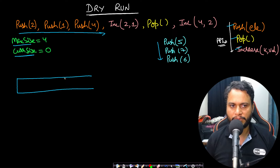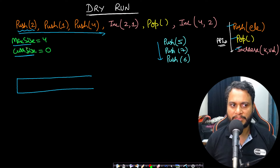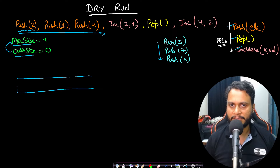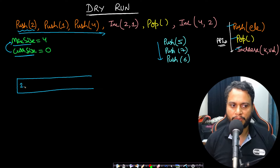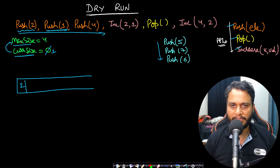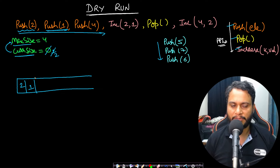We start with an empty dynamic array. When pushing 2, we first check current size against max size — no overflow — so we push 2 and increment current size to 1. When push 1 comes, again current size is lower than max size so we push 1 and current size becomes 2. Same for push 4: it is pushed and current size becomes 3.